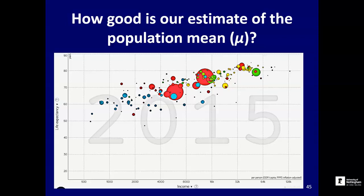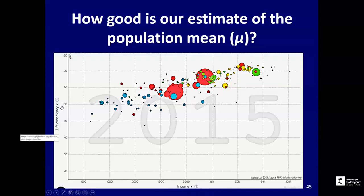This graph shows a still from an animation where each blob represents a different country. On the y-axis we have life expectancy, and on the x-axis we have income or GDP — how wealthy countries are versus how long you're expected to live. You can see roughly a positive relationship: wealthier countries tend to have greater life expectancies. Each blob represents not just a single person but a whole population, and the size of the circle indicates the size of the country's population. The big circles are China and India.